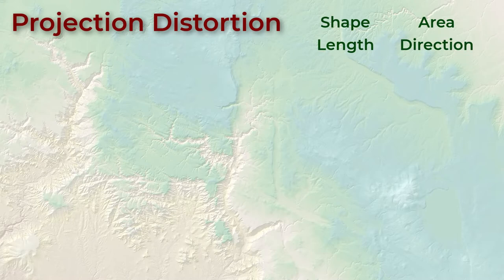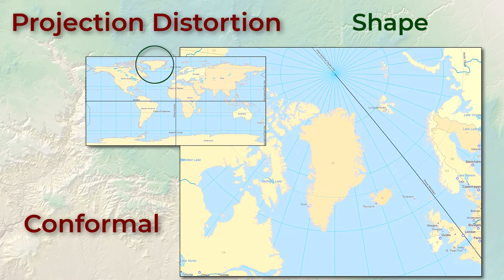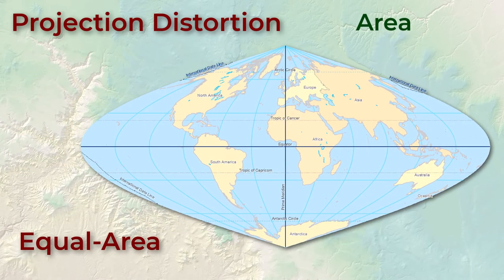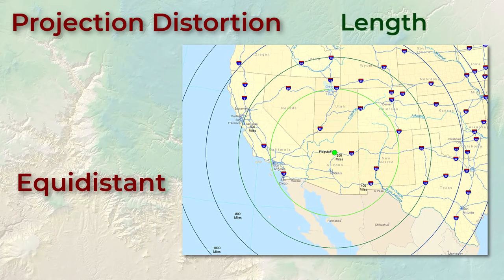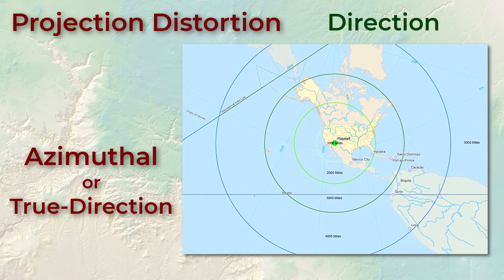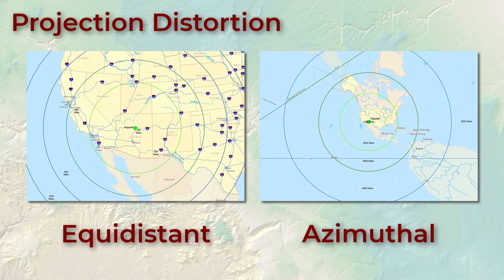Projections that maximize accuracy in shape are called conformal projections. Those that maximize area are called equal area projections. Those that maximize length are called equidistant projections, and those that maximize direction are called azimuthal or true direction projections. Equidistant and azimuthal projections only work from a specific point or along a specific line.